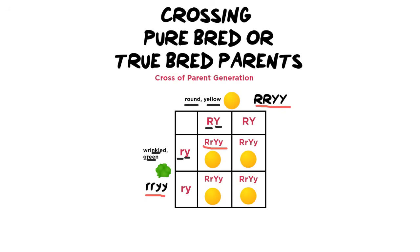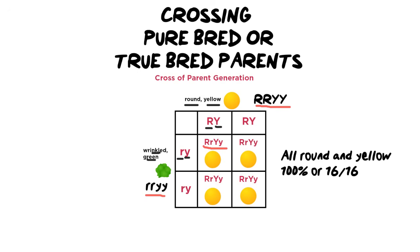There is no ratio for this cross and no combinations — it is simply all round and yellow, 100% or 16 out of 16 possible options. This is one of the easiest crosses to work out because all answers are the same. But what happens if we take one of these heterozygous individuals and cross it with another heterozygous? That creates a beautiful ratio we need to know off by heart.